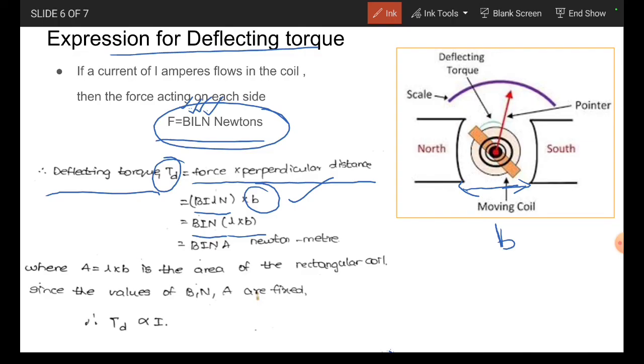This L into b is nothing but the area. I am substituting here L into b is the area: BiNA. In this expression, B value, N value, and A value are the constants, are the fixed values, and the I value is the only variable quantity.